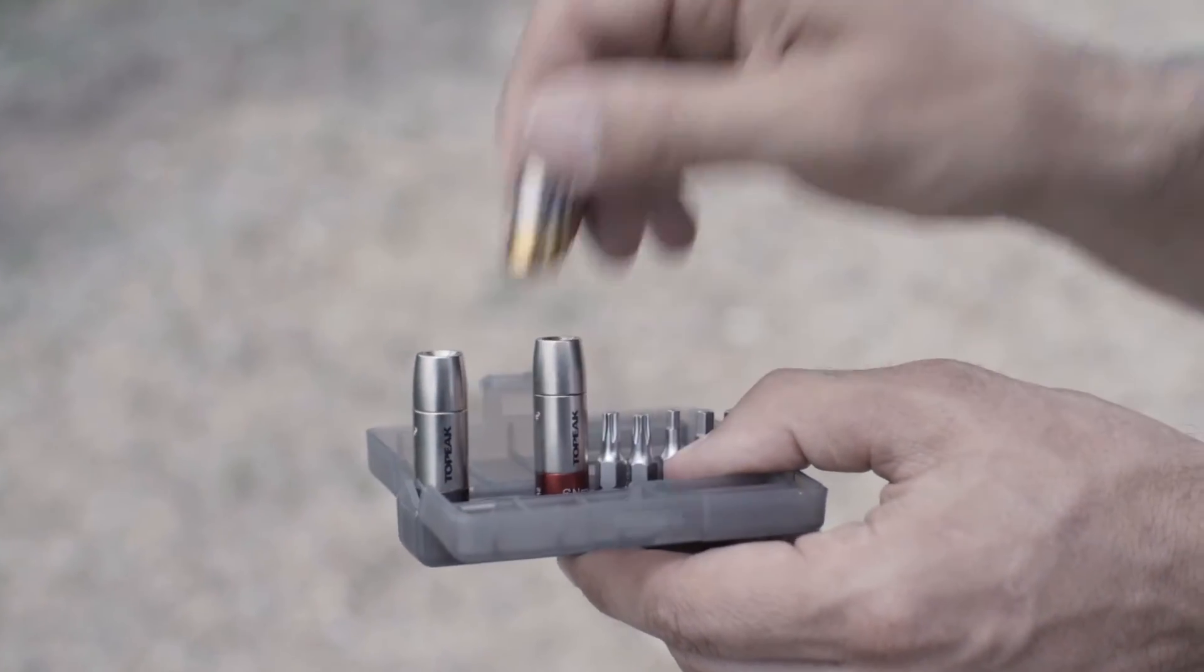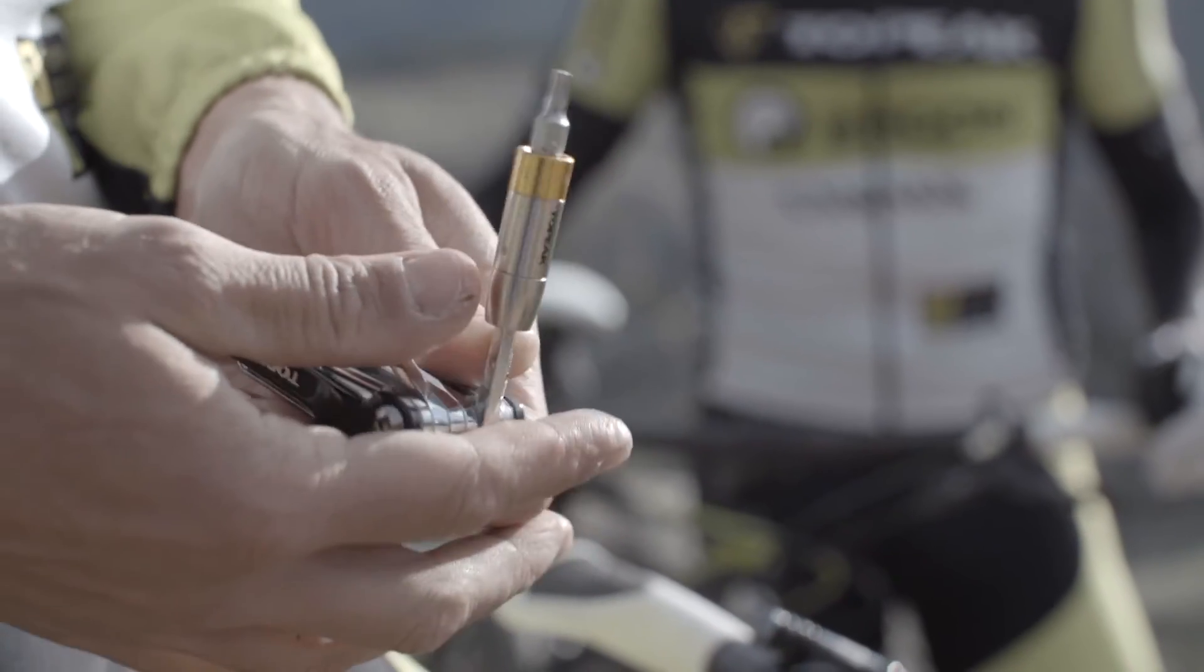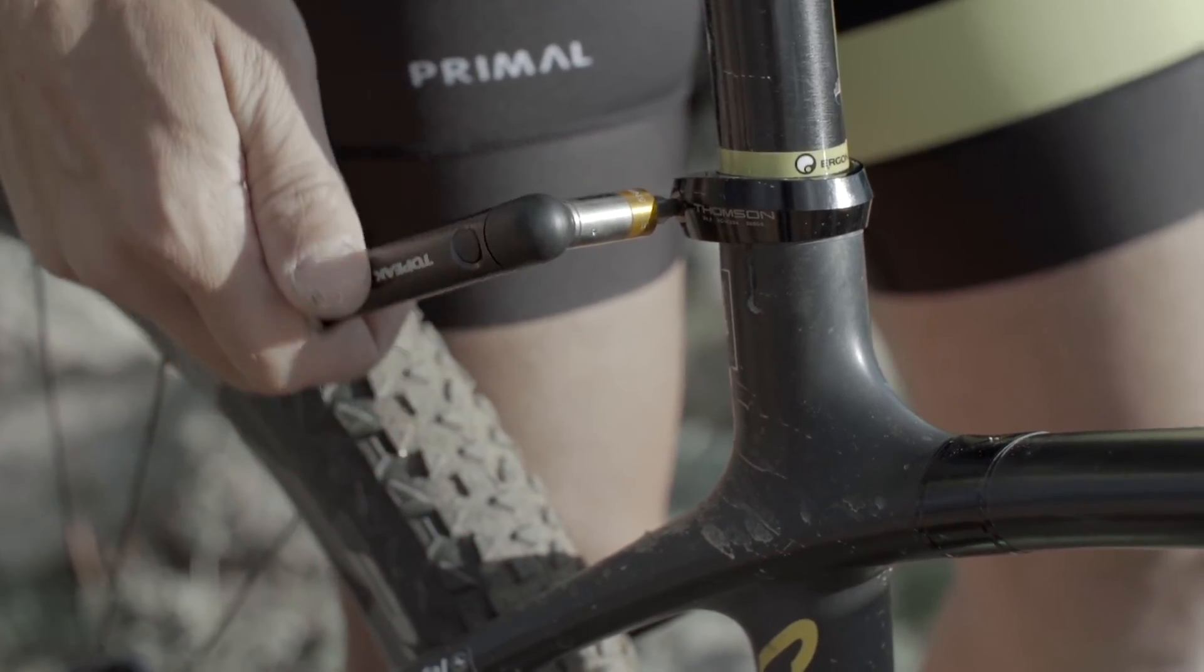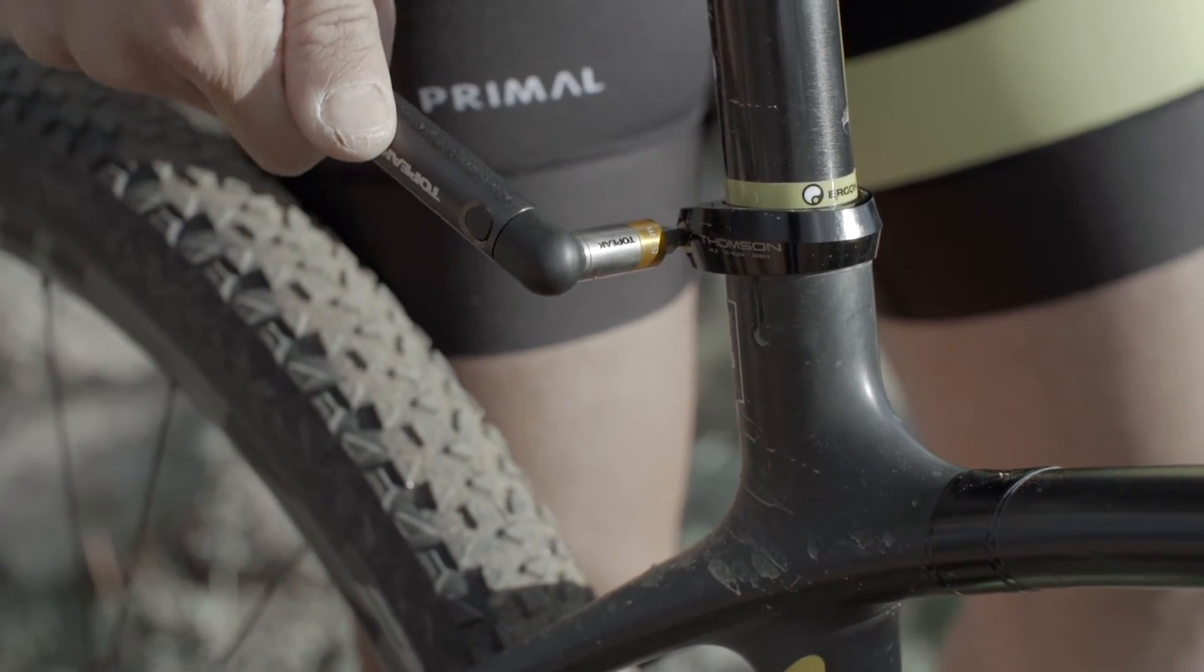Topeak's most minimal torque tool configuration, the Nano Torque box, works with any multi-tool containing a 5mm Allen wrench. A series of small clicks will inform you that the proper torque value has been reached.